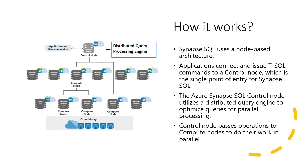Let us look at the underlying architecture of how Synapse SQL works. There is a control node, which is the brain of the system. This control node is managing all of the compute nodes. So Synapse SQL essentially uses a node-based architecture. Whenever an application writes a SQL query, it connects and issues that T-SQL command to the control node, because this is the one controlling the entire operation — it is the single point of entry to any Synapse SQL.